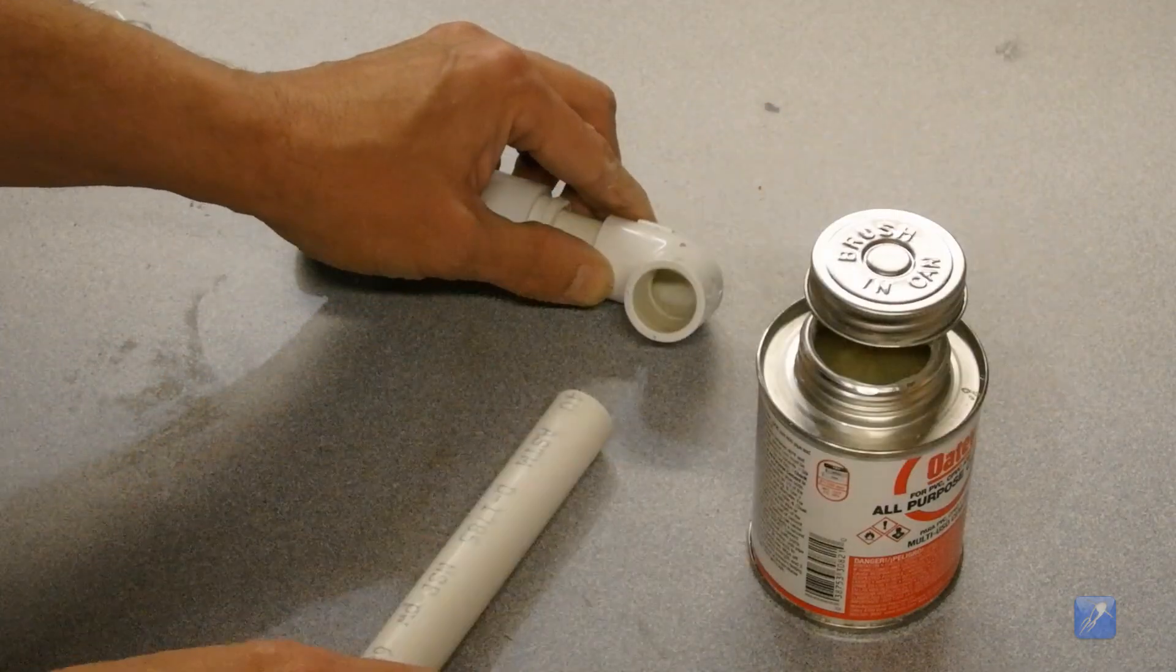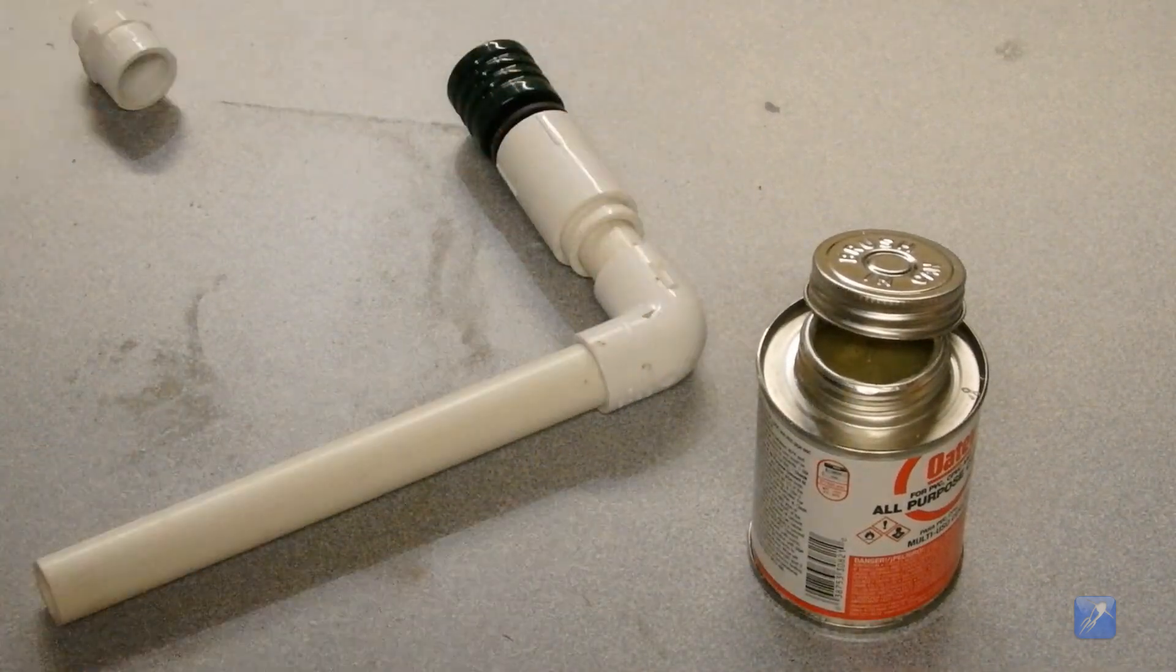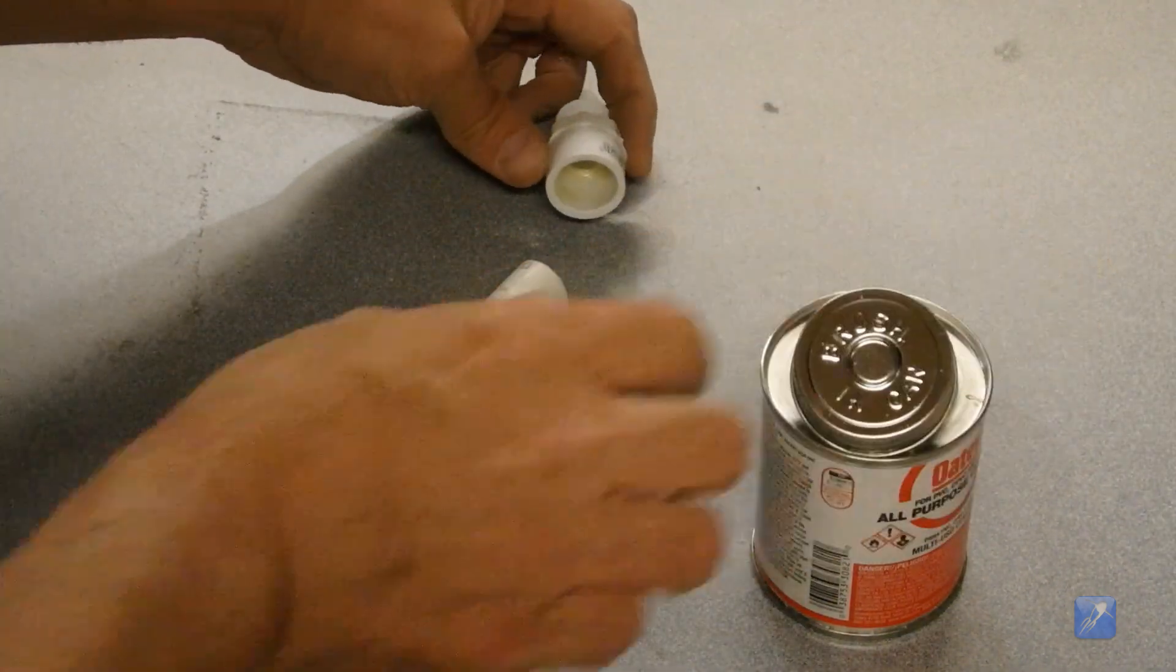Glue the longer piece of PVC pipe to the elbow. The last piece that you need to glue to the release head is the ½ inch male thread to slip adapter.